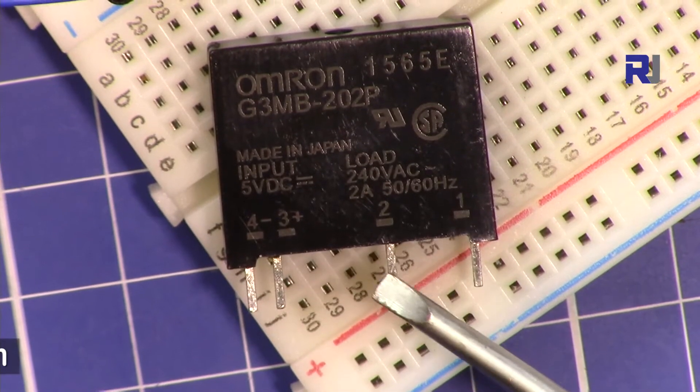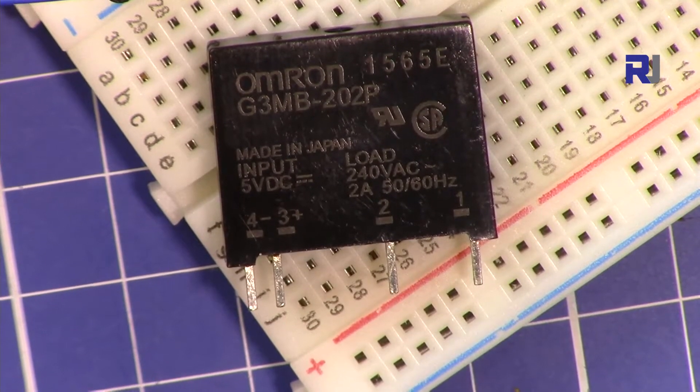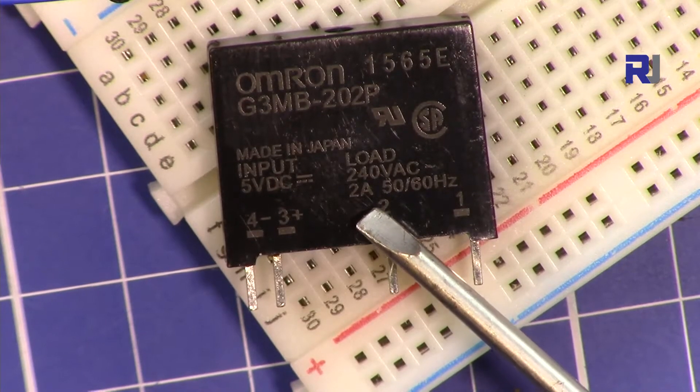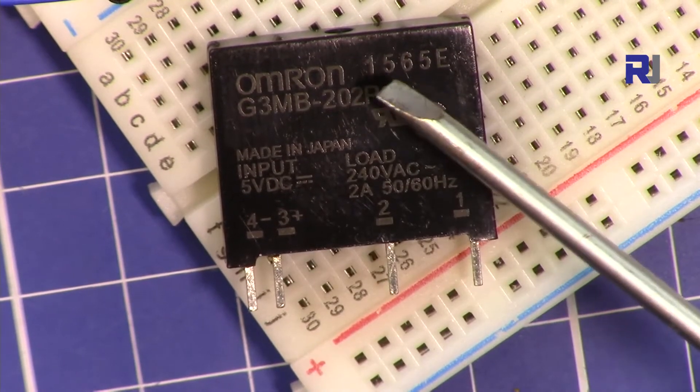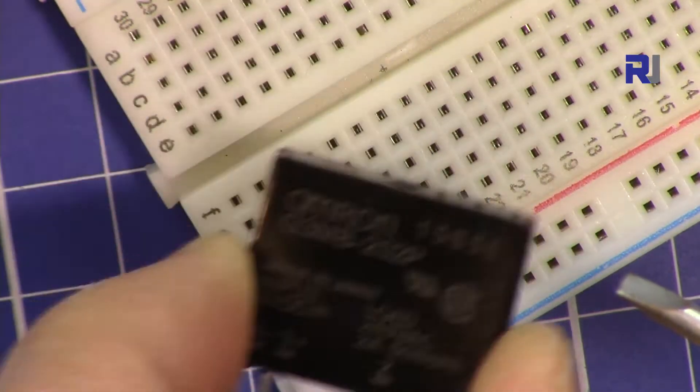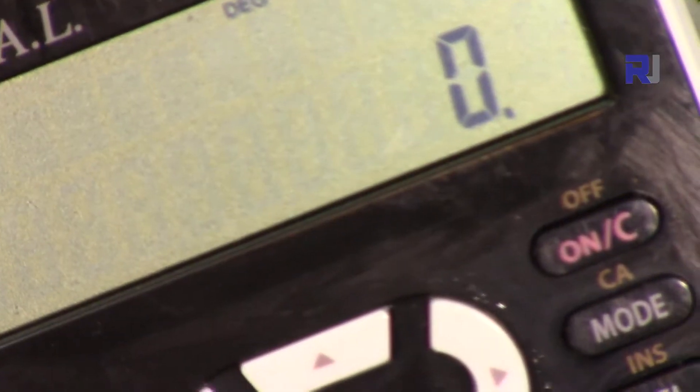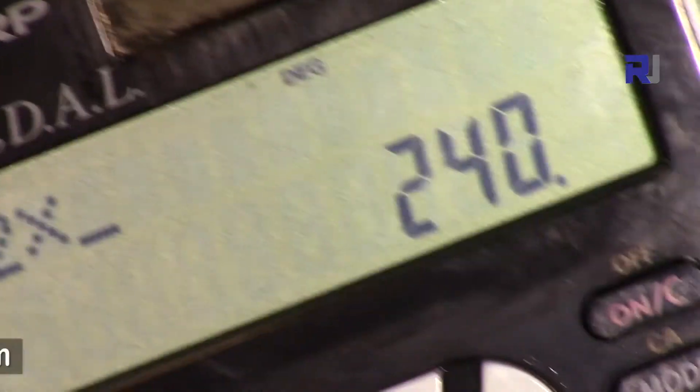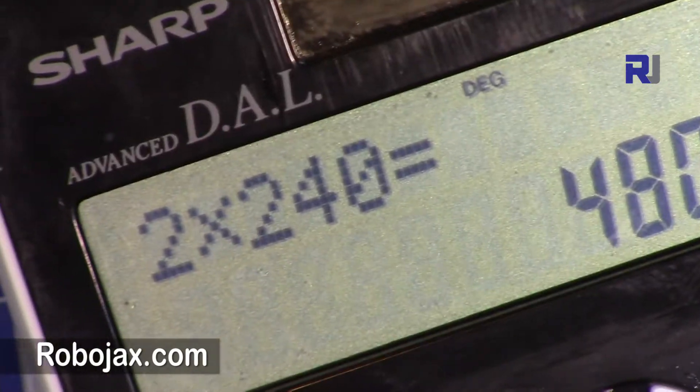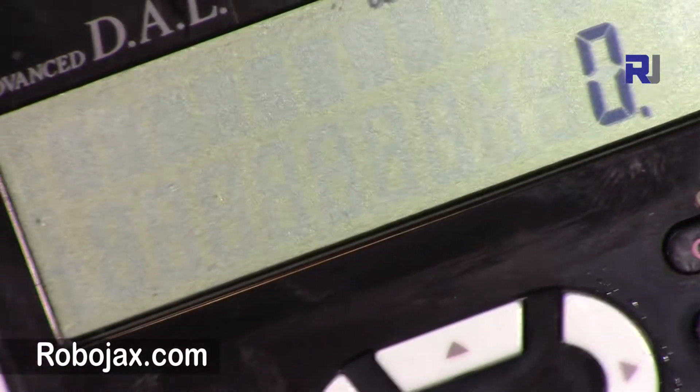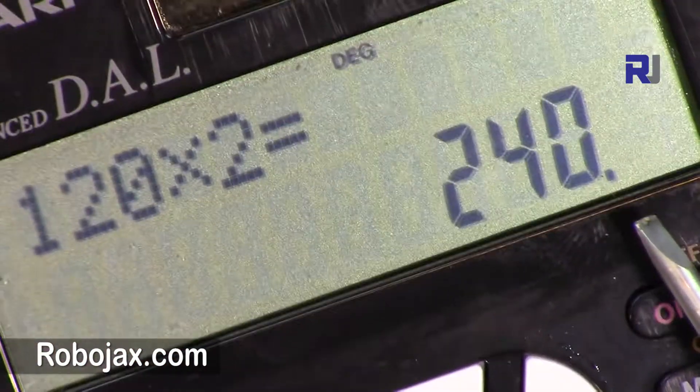As you can see, this is the actual module and it has been rated as 5 volts DC. The load it can control is an AC load of 200 up to 240 volts and 2 amperes. The amount of load that you are connecting to this module cannot exceed this rating. If we do 2 times 240, you can do up to 480 watts AC. If you're in a region with voltage of 120 volts, 120 times 2, you can connect a load of up to 240 watts AC.